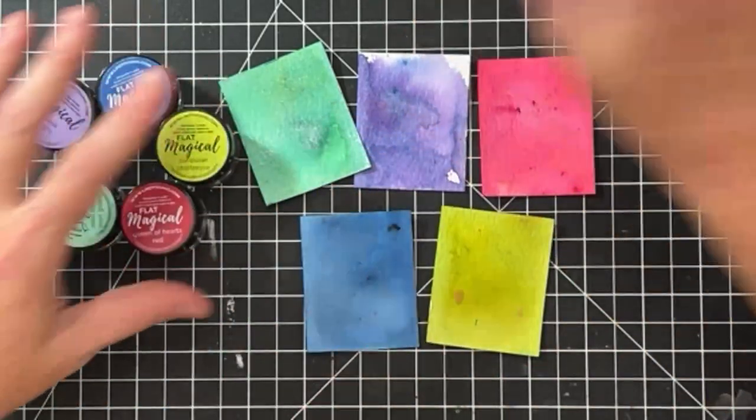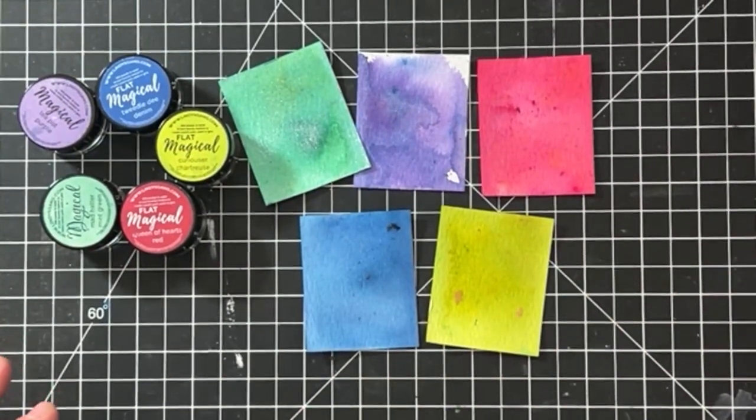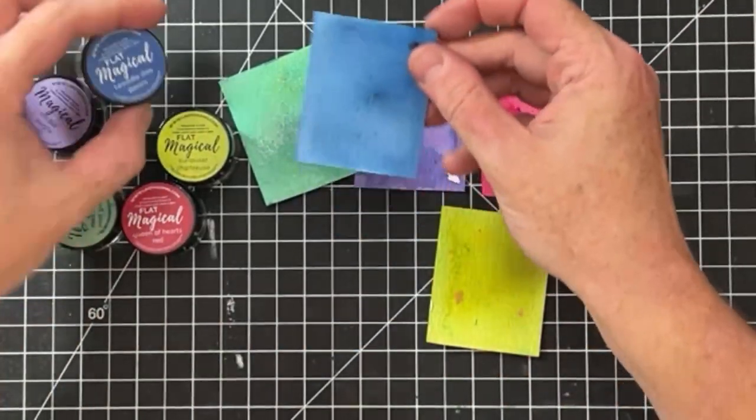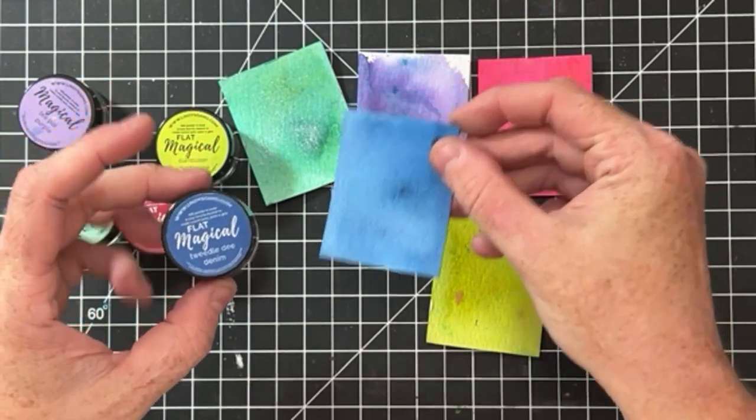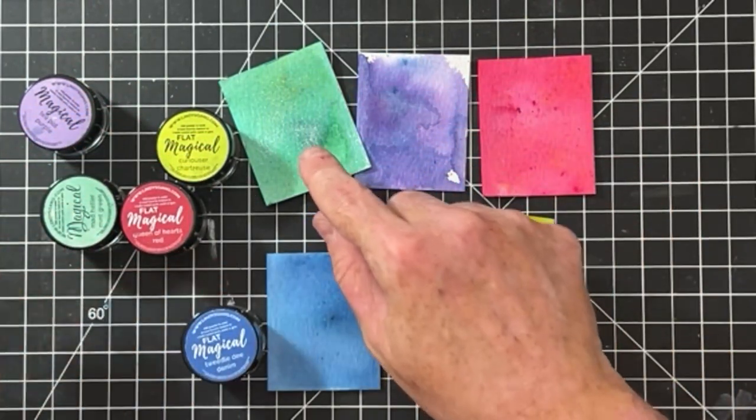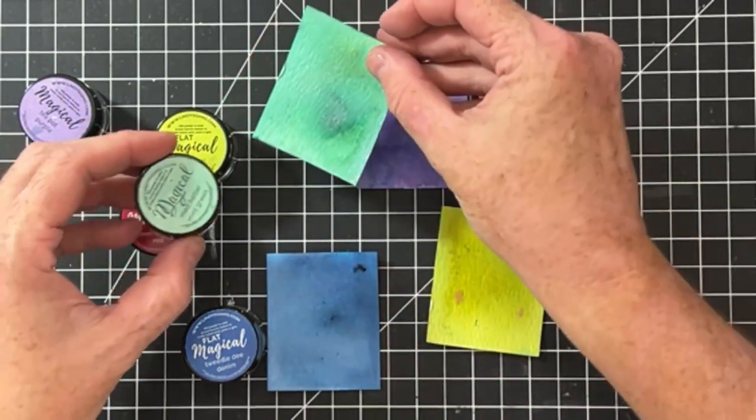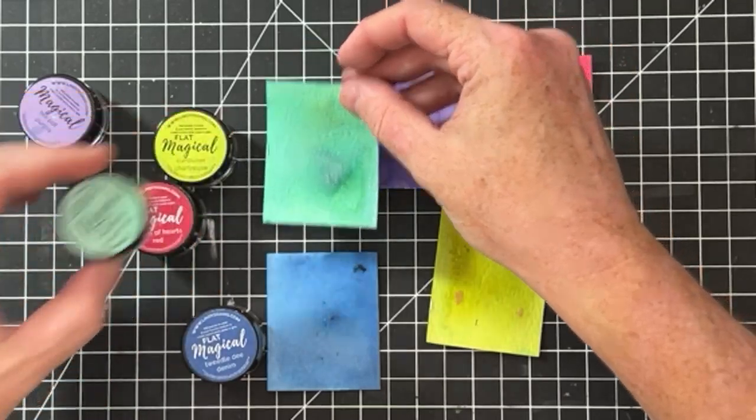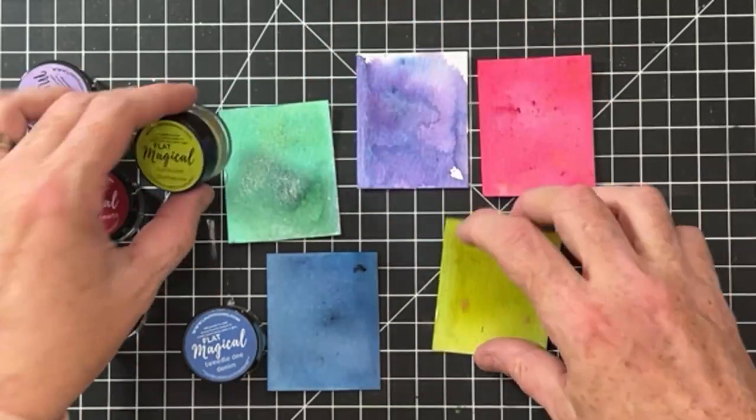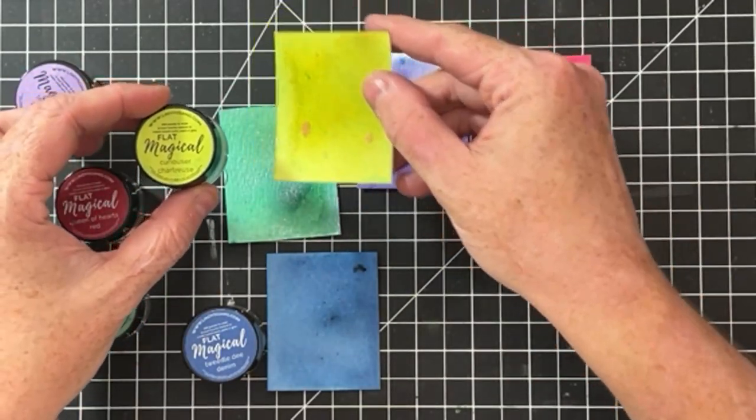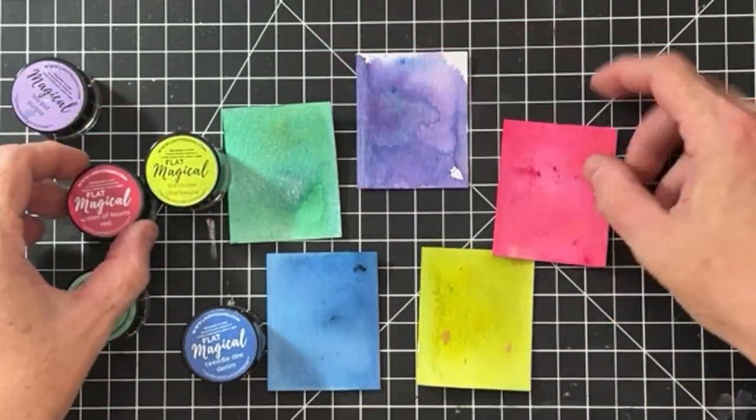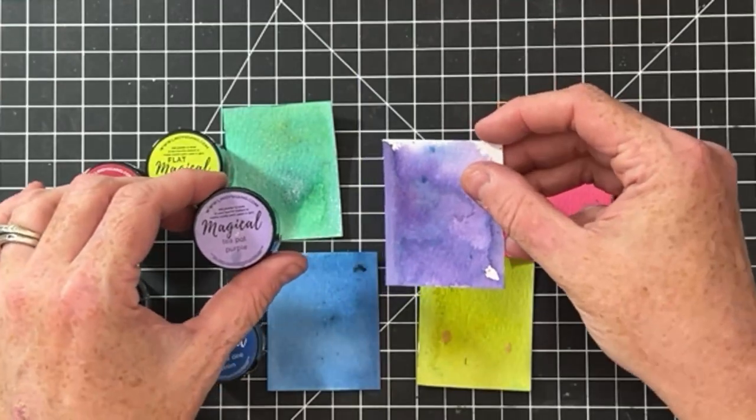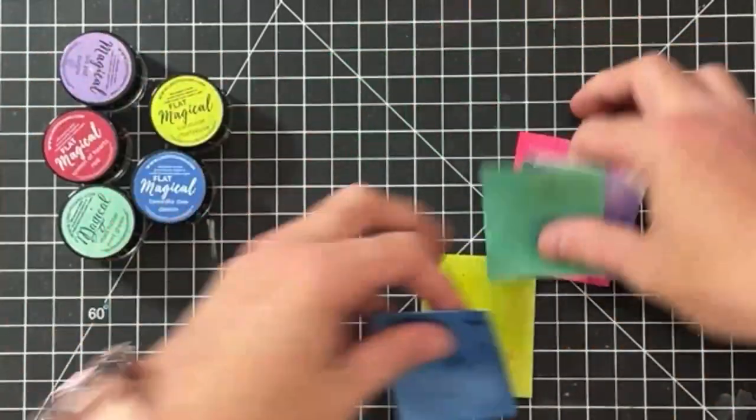So this is an Alice in Wonderland theme. So we have Tweedledee Denim. I know it's hard to tell again on video, but this one, you can definitely see the shine. This one is Mad Hatter Green, Mitten Green, Curiouser Chartreuse. We have Queen of Hearts Red and Teapot Purple. All right, so let's get going.